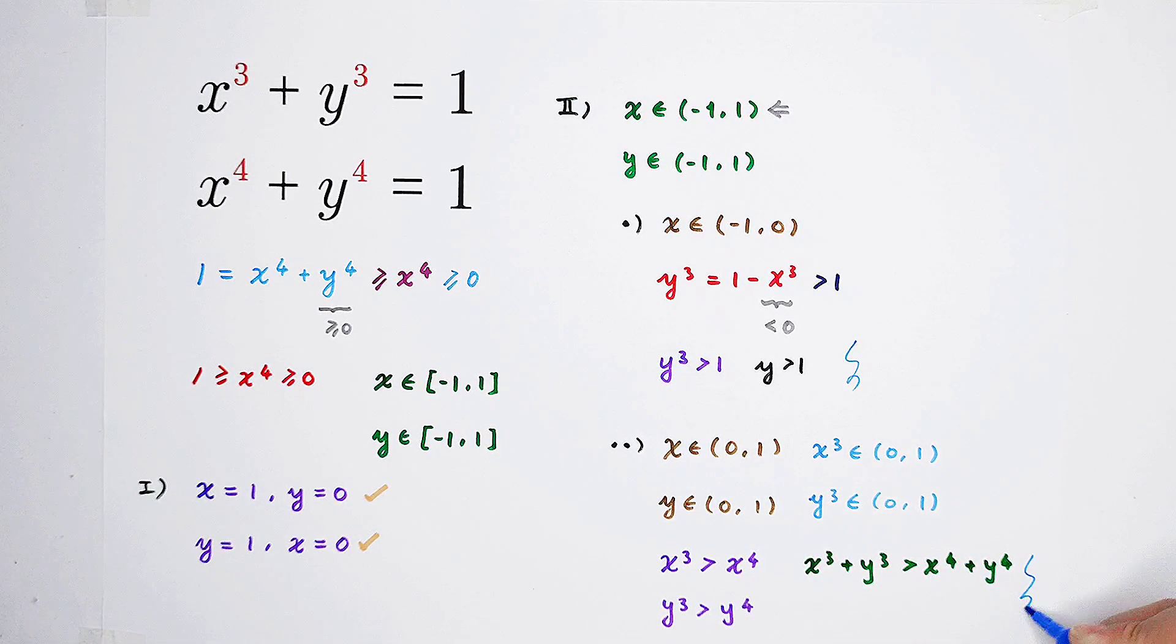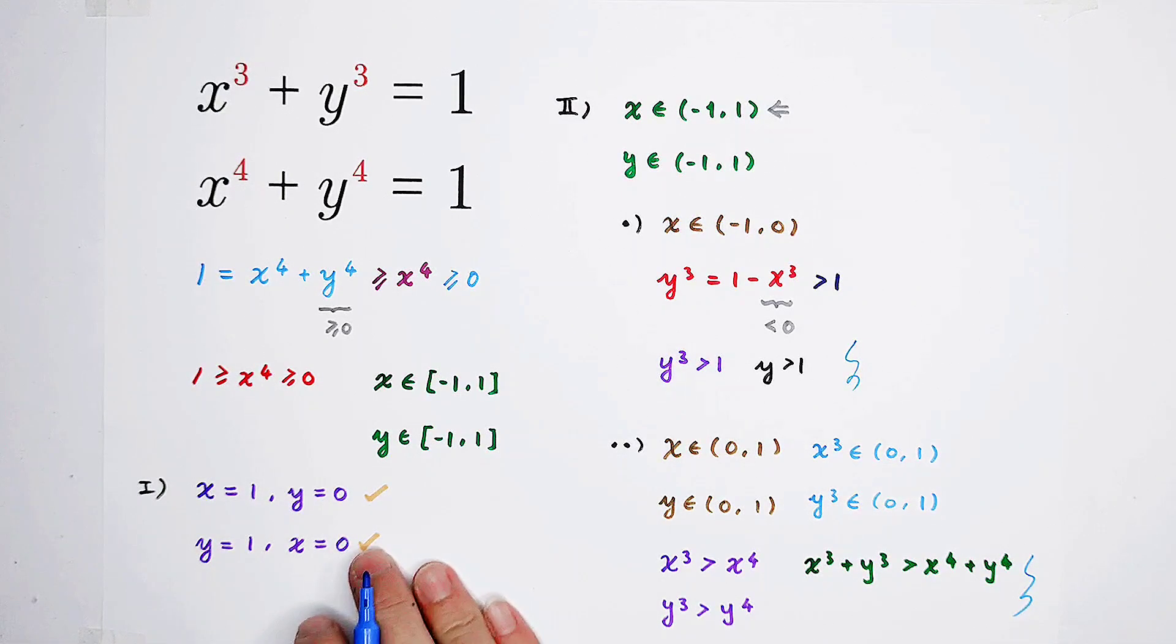This system of equations has only two solution pairs, or two pairs of solutions. Of course, these two pairs are 1, 0, or okay, 0, 1, sorry. Yes, 1, 0, 0, 1. Do you get it? Give me a thumbs up for this wonderful method. We see you next time. Bye-bye!